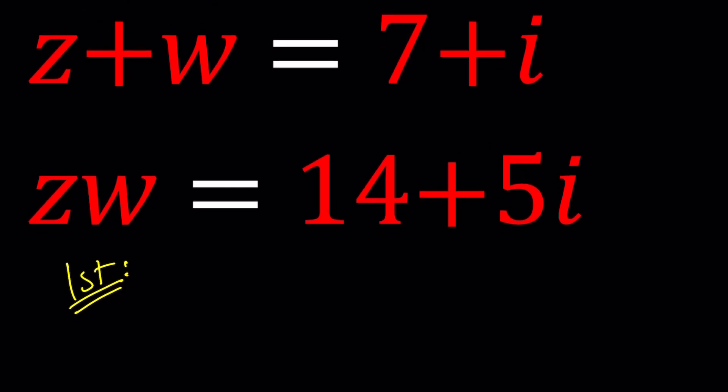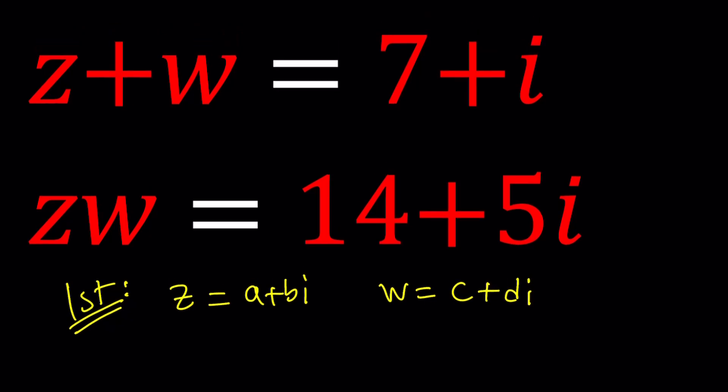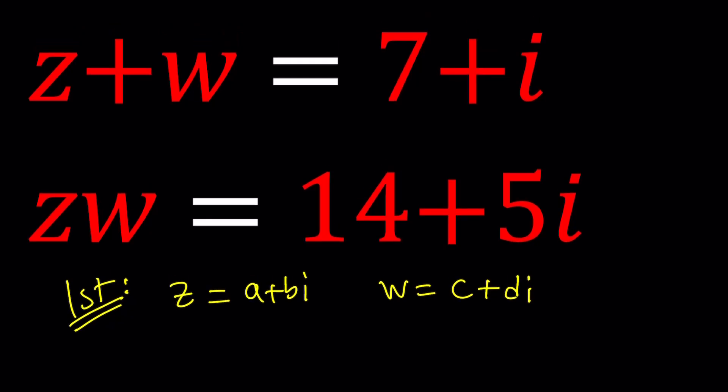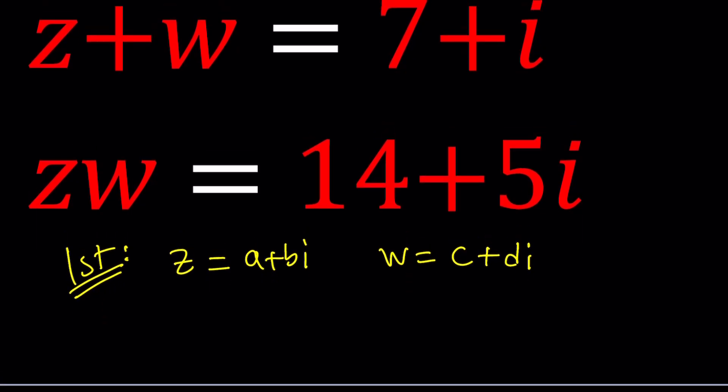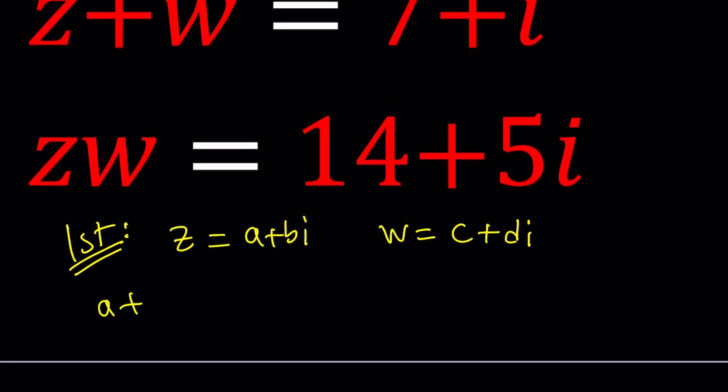I'm going to assume that they can be written in standard form such as Z equals A plus BI and W equals C plus DI. Notice that in this system Z and W are interchangeable and you're going to see that at the end. So now let's go ahead and plug both of these things into the equations. Replace Z with A plus BI and W with C plus DI and set it equal to 7 plus I and then do the same thing with the products.